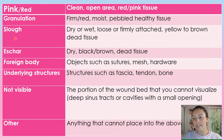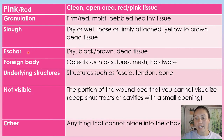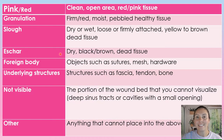Then we have slough. This is either dry or wet, it can be loose or firmly attached, and it's yellow to brown dead tissue. Slough is not viable tissue.